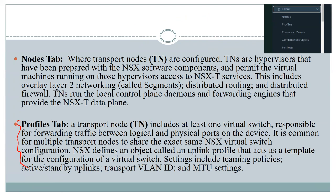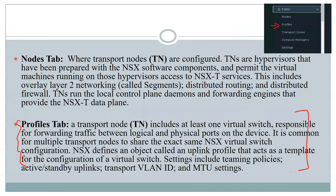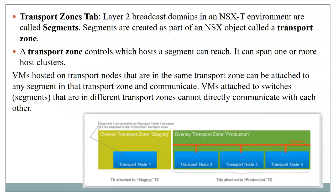Then you can see the Fabric tab. If you click the Fabric tab, you can see nodes, host profiles, transport zones, and compute manager. Inside the node section, you can see different options related to nodes. These transport nodes are hypervisors with NSX software components installed — hypervisors on top of which you have the NSX software package that allows VMs running over compute to access NSX services.